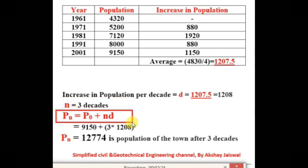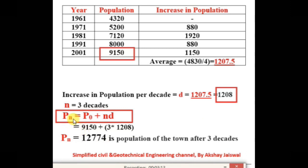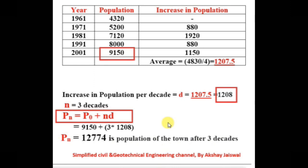Our formula is Pn = P₀ + n × d. We have P₀ = 9150 (last known population), n = 3 decades, and d = 1208. Therefore, Pn = 9150 + 3 × 1208 = 12774. So the population of the town after 3 decades, that is the population of year 2031, is 12774.